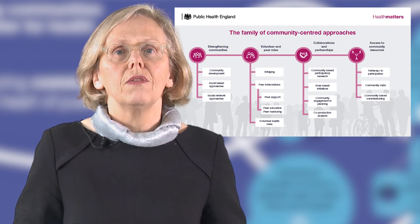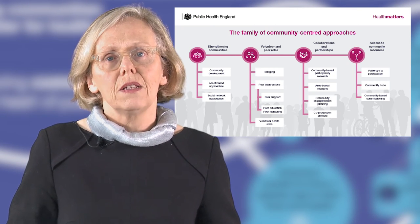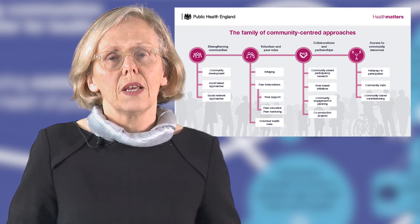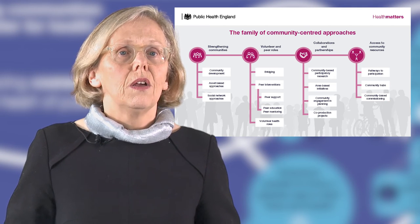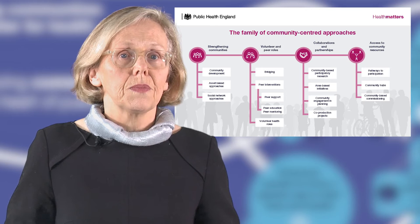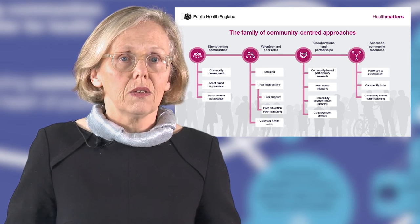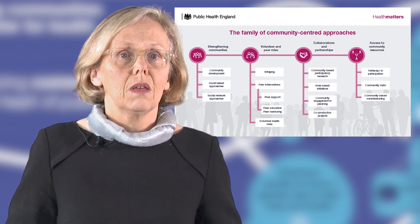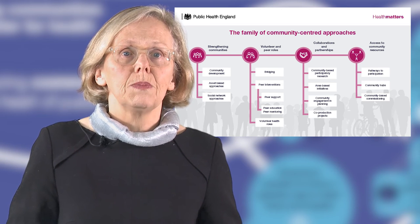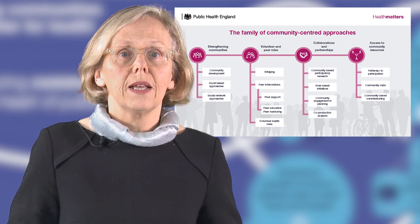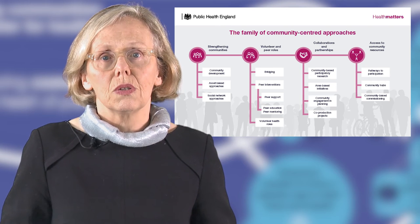Our family of community-centred approaches represents some of the practical and evidence-based options that can be used to improve community health and well-being. The four main strands include strengthening community action on health and the social determinants of health, volunteer and peer roles, collaborations and partnerships between communities and services, and increasing people's access to community resources.